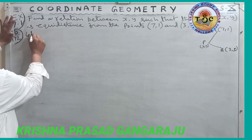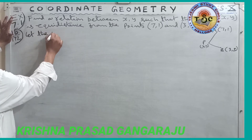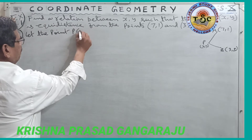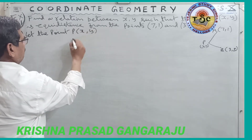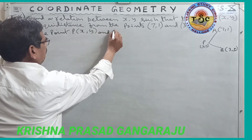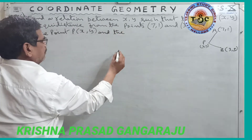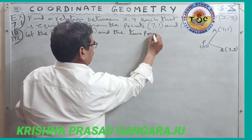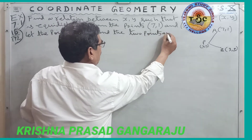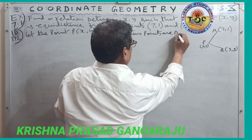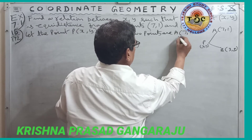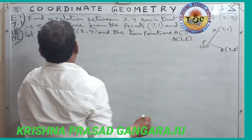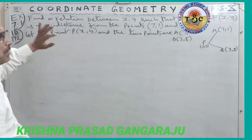Let the point P be (x, y), and the two given points are A(7, 1) and B(3, 5). Next, we apply the distance between points formula.